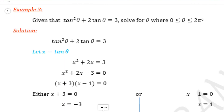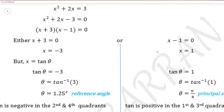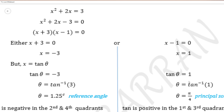Example 3: given that tan squared theta plus 2 tan theta equal 3, solve for theta where theta is between 0 and 2 pi radians. We let x equal tan theta, giving x squared plus 2x equal 3. Rearranging gives x squared plus 2x minus 3 equal 0, which factorizes to give x plus 3 and x minus 1 equal 0. Solving each bracket, we get x equal minus 3 and x equal 1. We now re-substitute x equal tan theta.